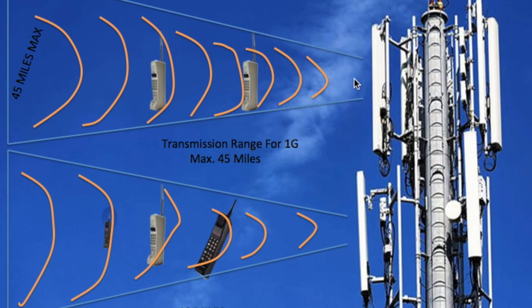The speed was very slow — just 2.5 kilobits per second — which is why data communication wasn't possible. These phones were not capable of data at all, just voice calls. They used a 30 kilohertz bandwidth and were only able to achieve 2.5 kilobits per second, which was extremely slow and not fast enough for data communication.